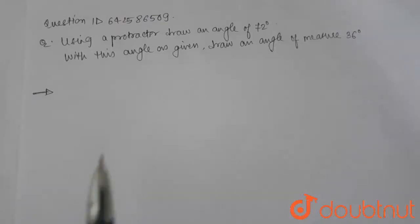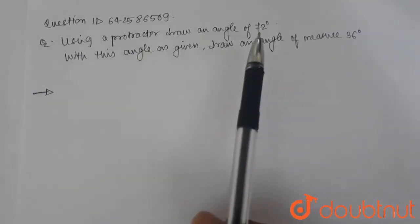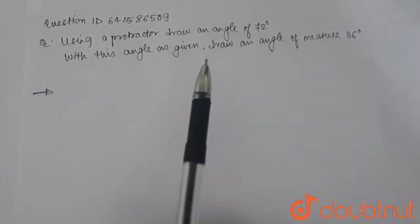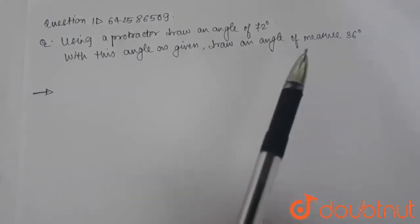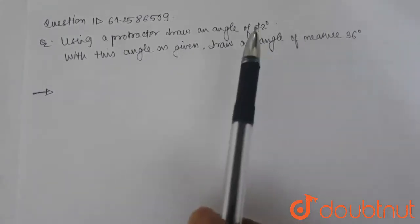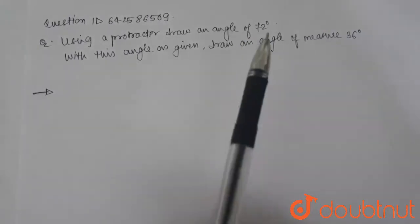Question is, using a protractor draw an angle of 72 degrees and with this angle as given draw another angle of 36 degrees, which is half of 72. So we will have to make an angle bisector.